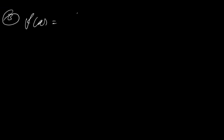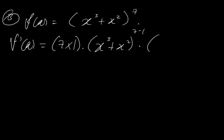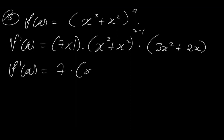Alright, let's look at example number 3. Say f of x is equal to (x cubed plus x squared) raised to the 7th power. You can pause this video and attempt to do it on your own. This implies that f prime of x is equal to n times c, which is 7 times 1, times the something (x cubed plus x squared) with the power reduced by 1, giving 7 minus 1, times the derivative of something, which is 3x squared plus 2x. So this will now be f prime of x being equal to 7 times (x cubed plus x squared) to the new power of 6, times (3x squared plus 2x).